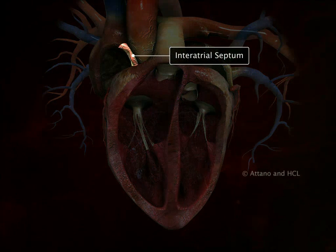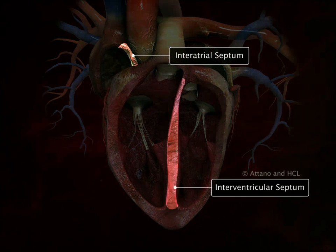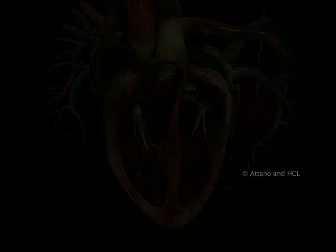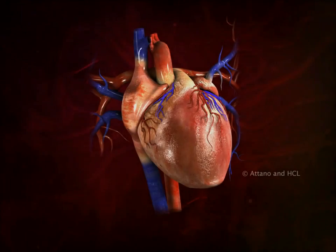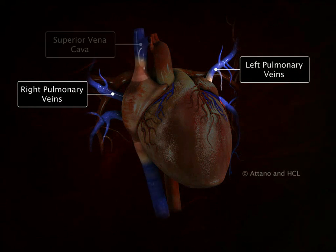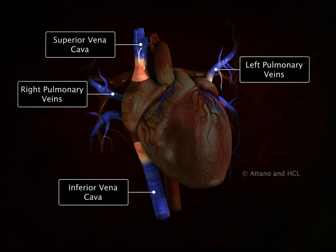The interatrial and interventricular septa separate the left and right sides of the heart from each other. The pulmonary veins bring blood into the left atrium, and the superior and inferior vena cava bring blood into the right atrium.